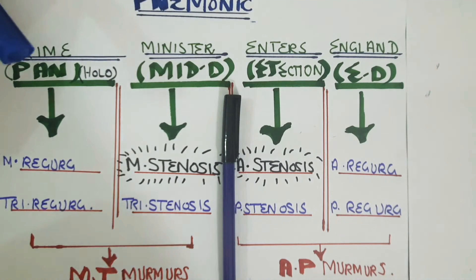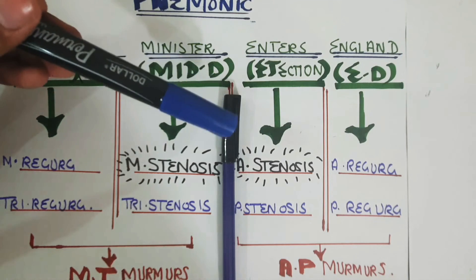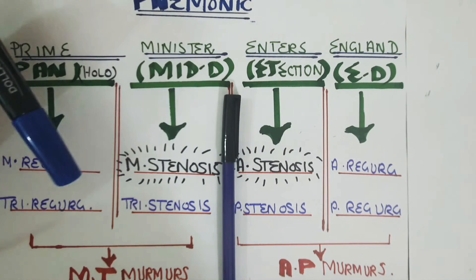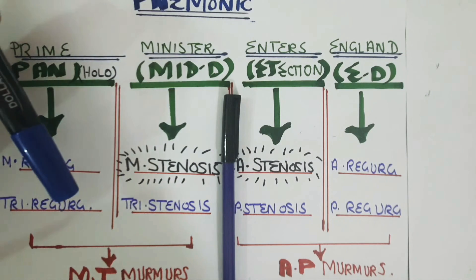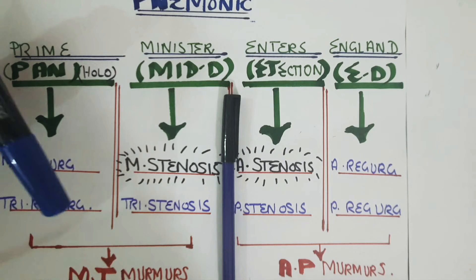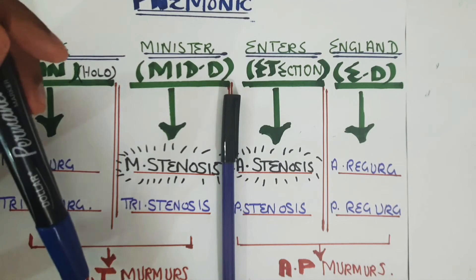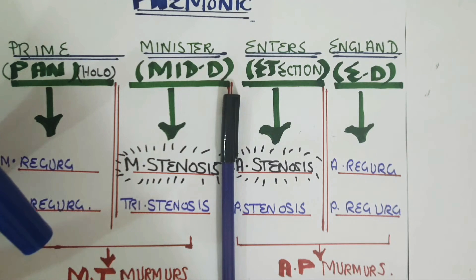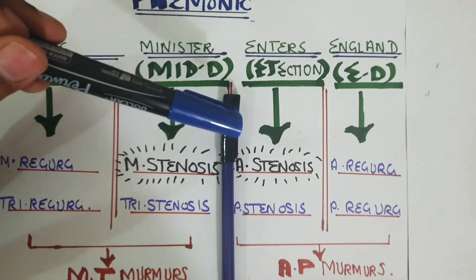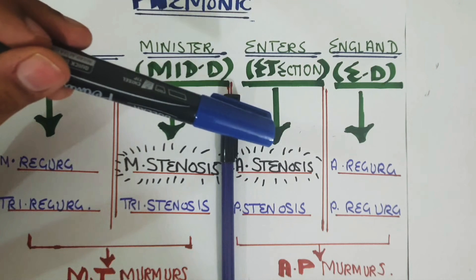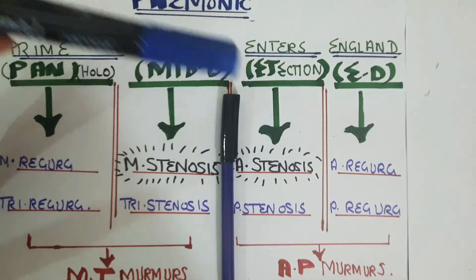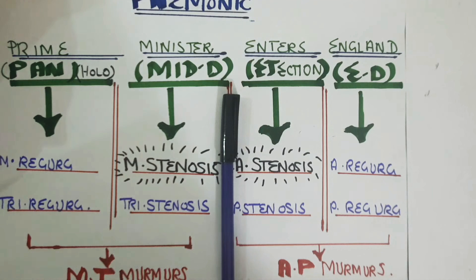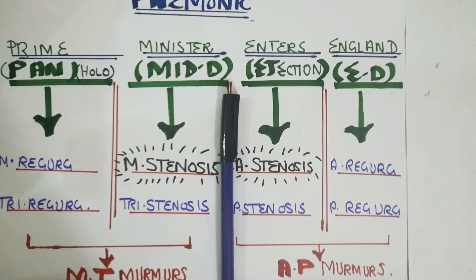Moving on to the second part of the mnemonic: the marker you are seeing divides the murmurs into two sides. On the left side, all the murmurs in the MT category will come — three to four murmurs — which are the mitral and tricuspid murmurs. On the right side of this marker, all the murmurs will come into the domain of AP murmurs, which are the aortic and pulmonic murmurs.